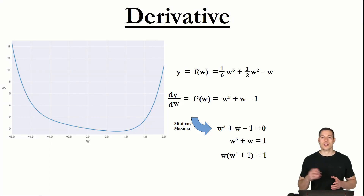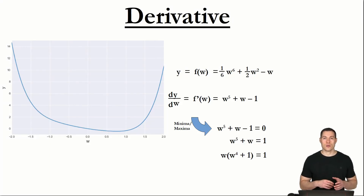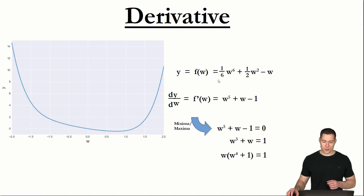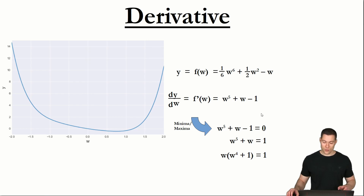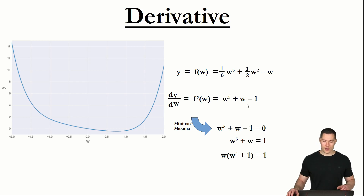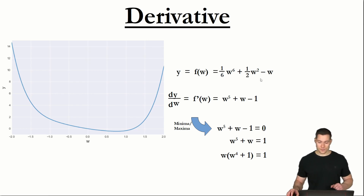Welcome to part 7 of the basics of the blurring series. In the previous video, we left off with the observation that for this function, we can determine the minimum with an analytical approach. So the question then was, how do we find the minimum of this function?